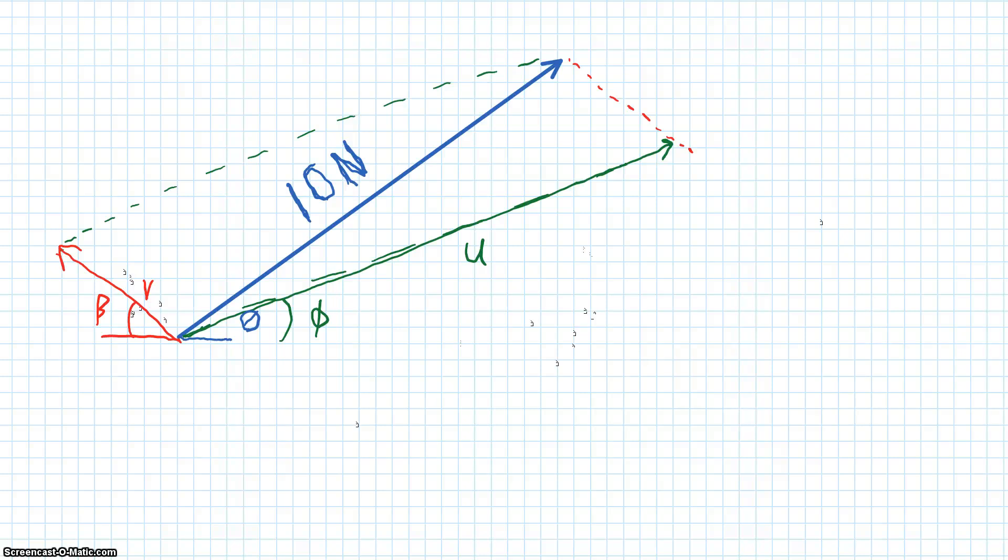Why might we want to do this? Well, if this 10 newton force was being held up by a structure which had members that were at the angles beta and phi, if these members were two force members, then the force in these members is going to be the components of this 10 newton vector along their axes. In this case, u and v. This could be really useful if we need to know the force in these members in case we're trying to design these.